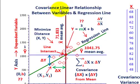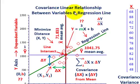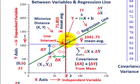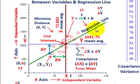What we're going to be going over here is covariance and its linear relationship between some variables, and really how we use this covariance to determine a regression line. We're going to go through an example where we use the covariance of some variables to determine a regression line.